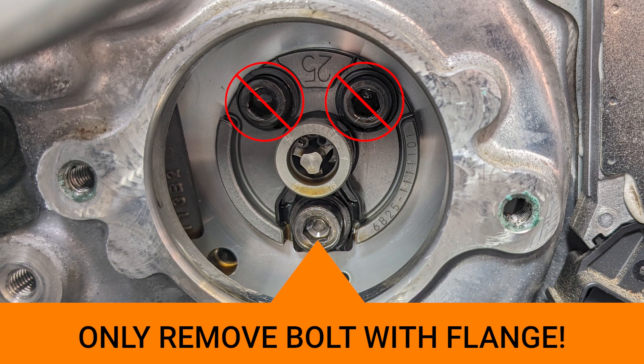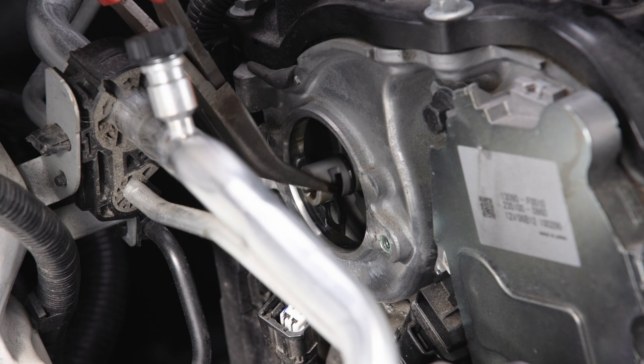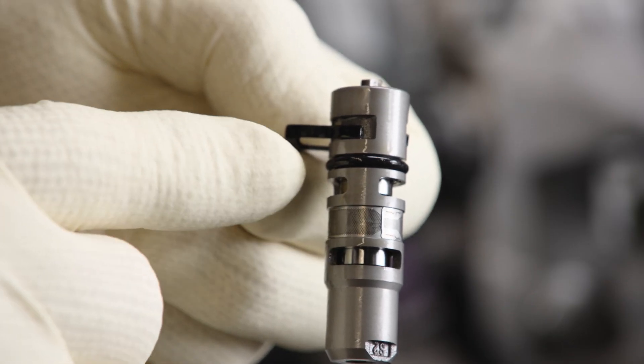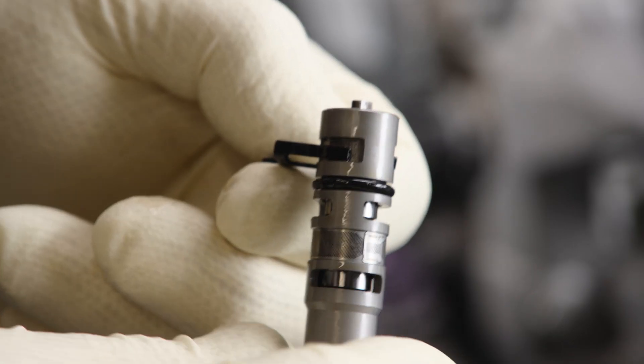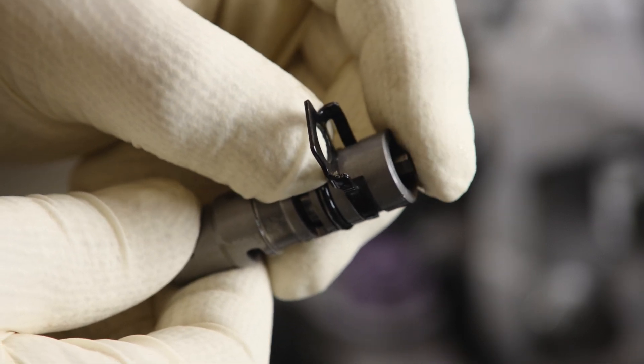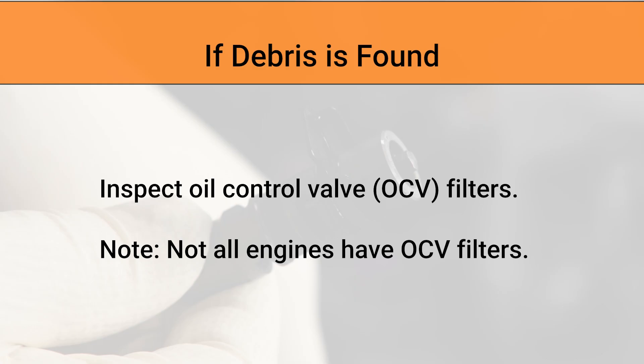Engine oil debris buildup in the control valve can cause timing fault codes. You can remove the control valve and inspect it for debris. If you find debris or still suspect debris, check the oil control valve filters as well. Some models have a filter in the camshaft bearing caps and others in the oil lines and fittings. Check repair info to locate the OCV filter on the engine you are working on.